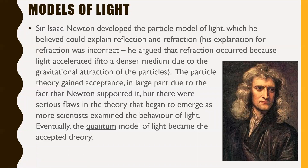Sir Isaac Newton was the one who developed the particle model of light, which he believed could explain reflection and refraction. Long story short, Newton came up with this idea that light was behaving as a particle, and people just accepted it, mostly because it was Isaac Newton and he was kind of a big deal. But then as the years went on, people realized this doesn't actually work — there are some flaws with it. So eventually we came to adopt something called the quantum model of light, which is now the currently accepted theory.